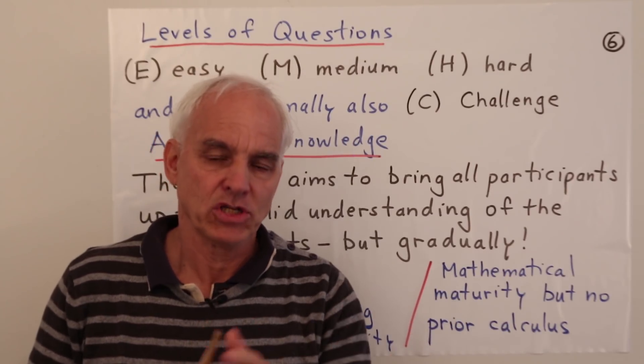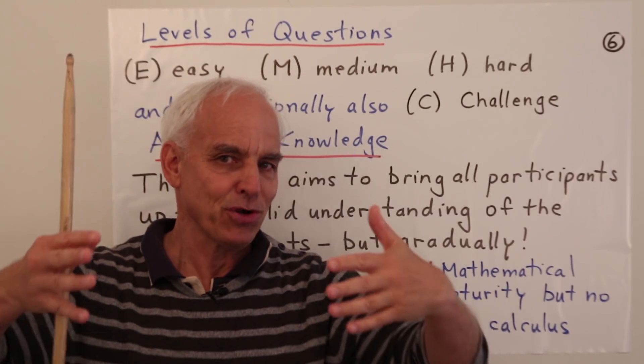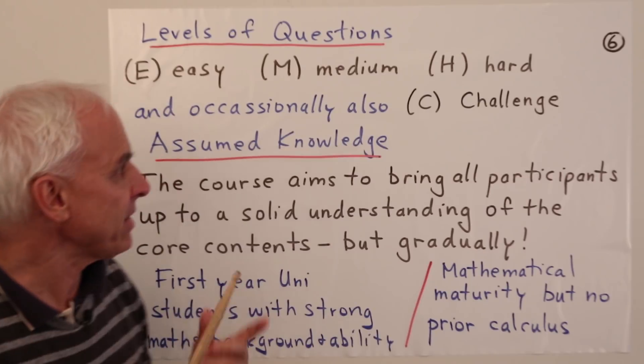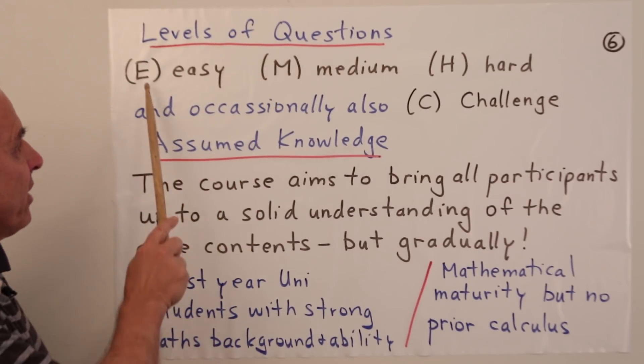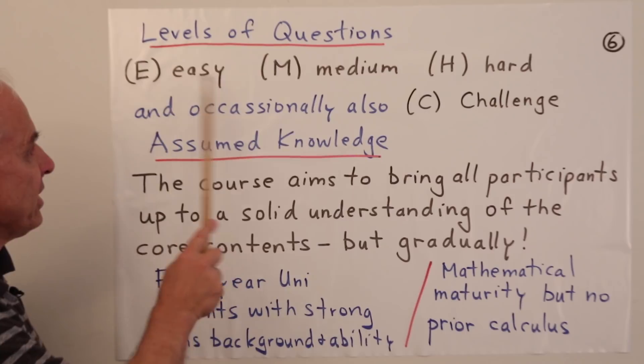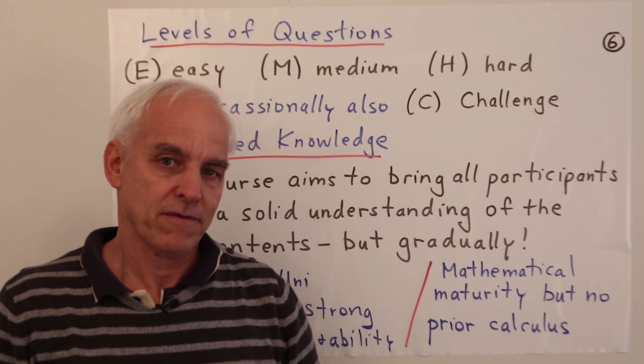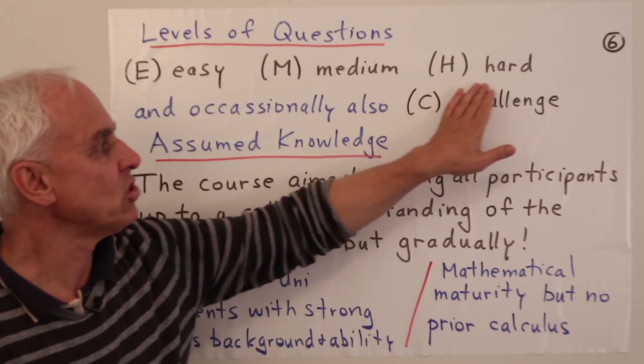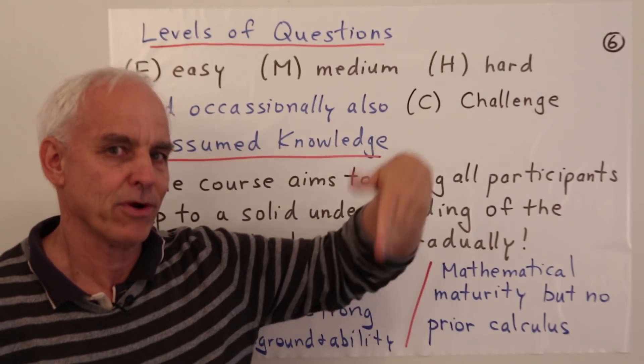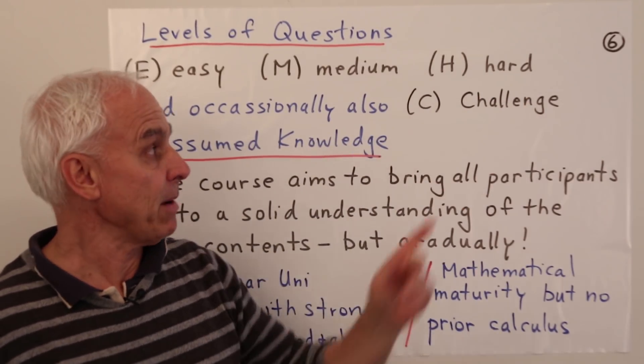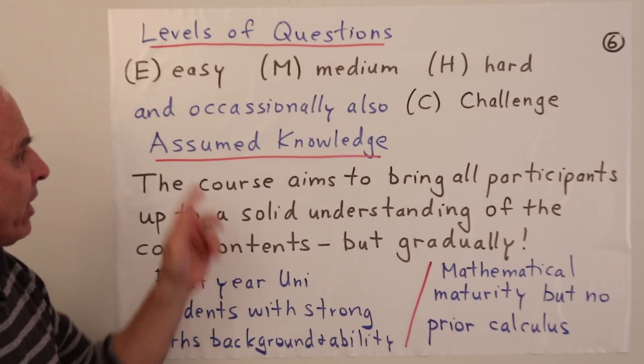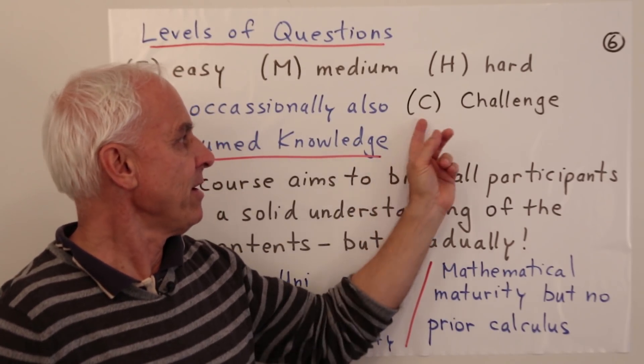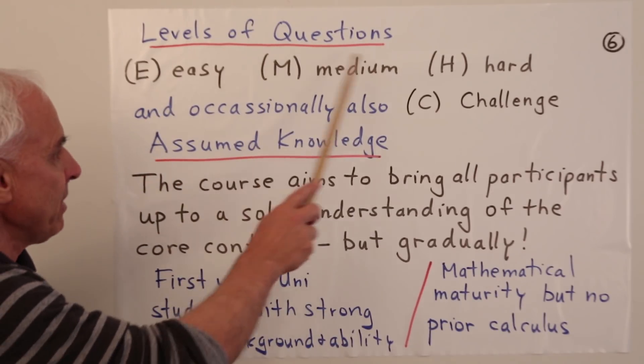I realize there will be quite a wide range of people taking the course from first-year undergraduates to university mathematics professors. So there will be a spread of levels of material. To make that easier, I'm coding the questions with E's, M's, and H's for easy, medium, and hard. If you're a beginner student, make sure you can do all the easy questions, and don't worry too much if you can't do any of the hard ones. And occasionally there will be a research level type question, that'll be denoted by C.